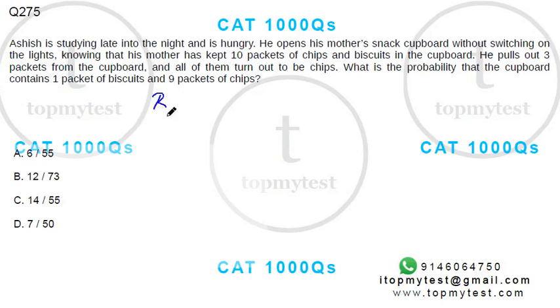So we have biscuits and chips. He has pulled out 3 packets and all of them are chips. So we know chips has to be at least 3 out of 10.